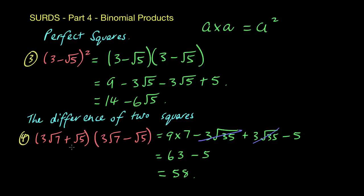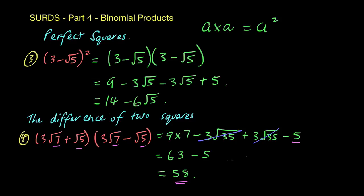Before we wrap up, notice that with the difference of two squares, those two middle terms will always cancel out. Also notice that with surds in binomials, we end up with whole numbers — that's always going to happen, because we're multiplying those same surds onto themselves. Here root 7 times root 7 gave the whole number 7, root 5 times root 5 gave 5, and the surd terms in the middle cancelled out anyway. So that gives you a whole number result.